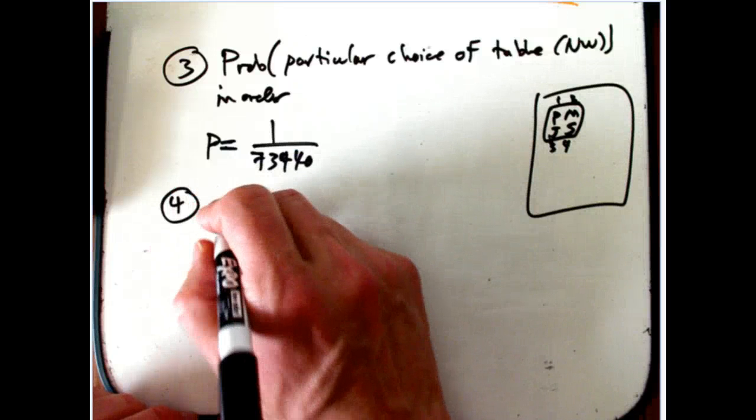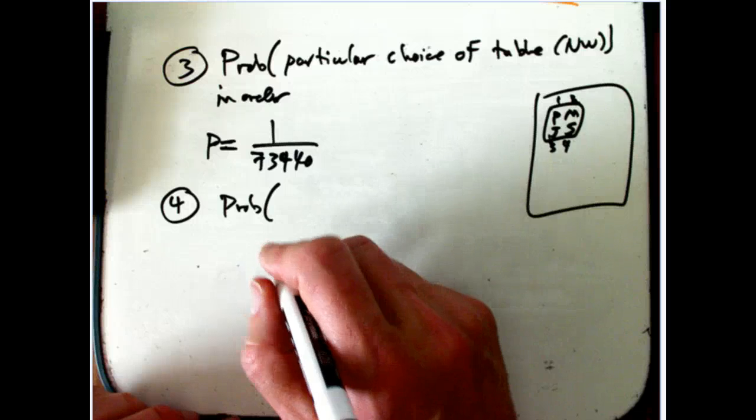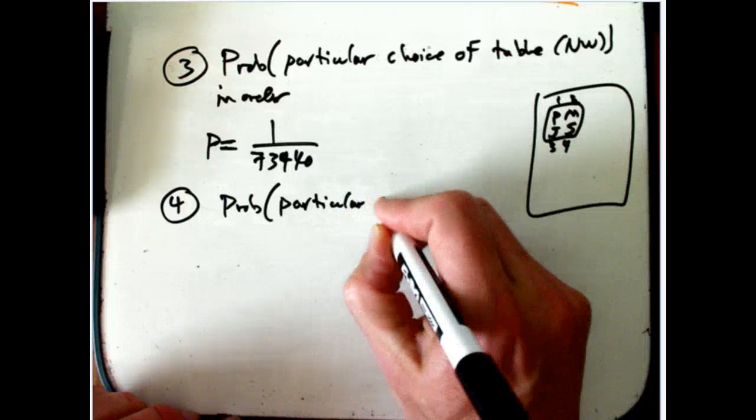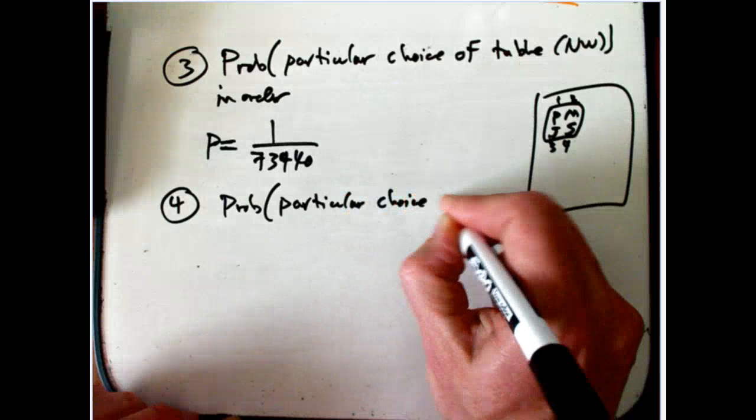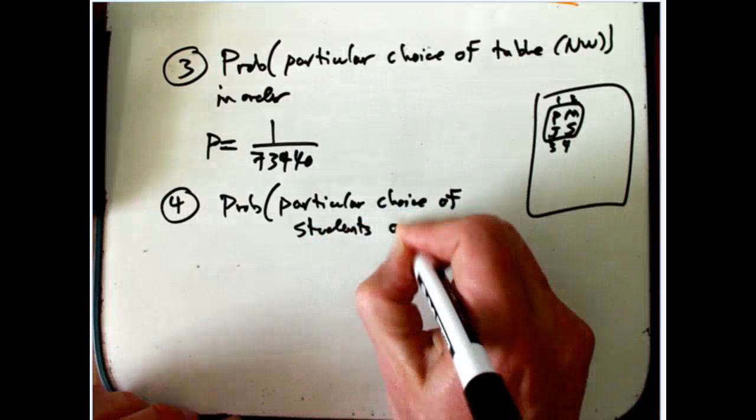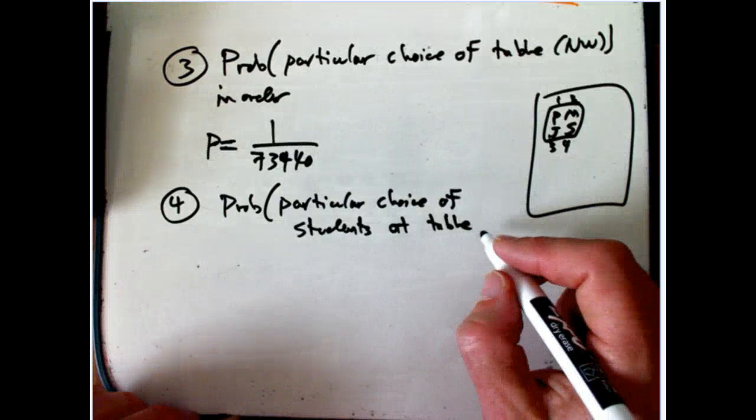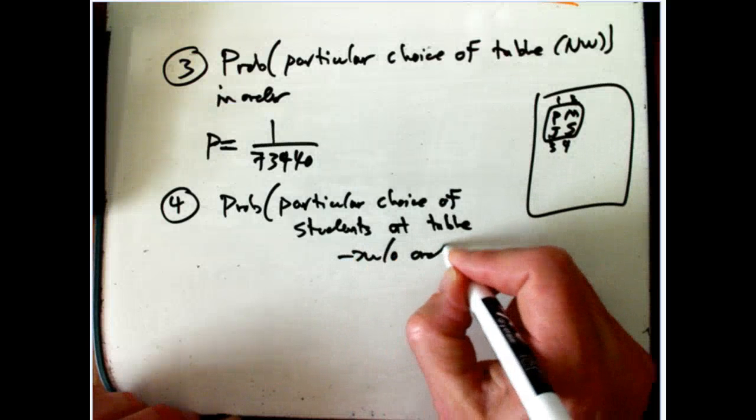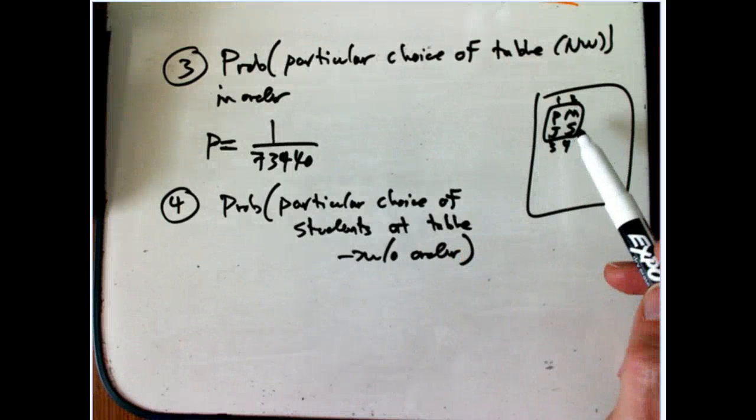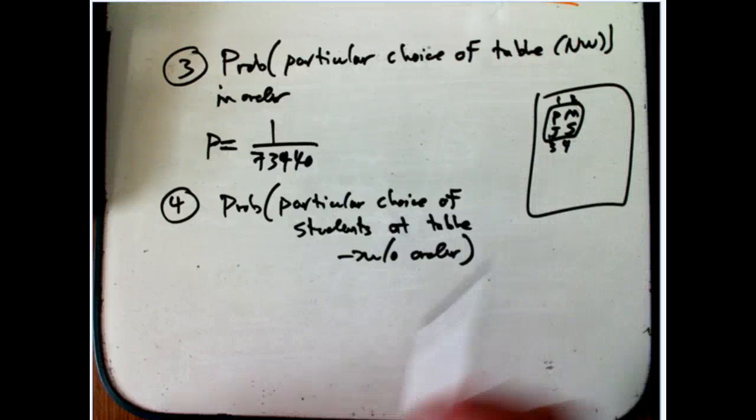Well, we already did that, right? The probability that we get a particular choice of students just sitting at a particular table but without paying attention to the order. So that would be the probability, say, Paul, Mary, Jack, and Sue have been friends since kindergarten, and what's the probability that they will just get seated together, period?